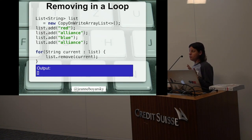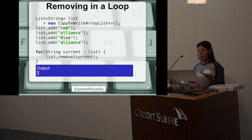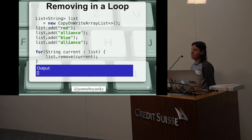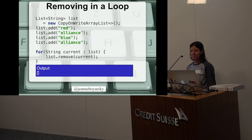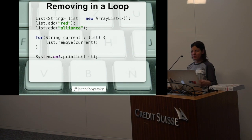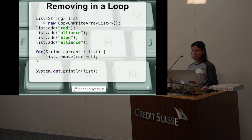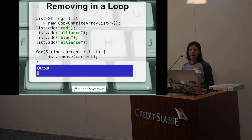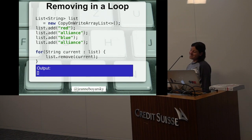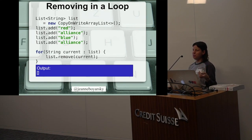How do we fix this? The easiest way is to use a proper collection where you can modify a list — one way is the CopyOnWriteArrayList. You could also use a remove with an iterator, or use removeIf, which would solve this entire problem. Or in this case, removeAll, because it's really trying to remove everything — so you could just do a clear and call it a day.